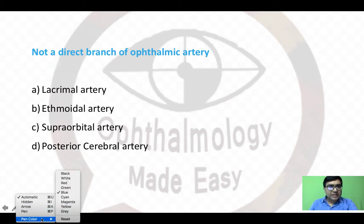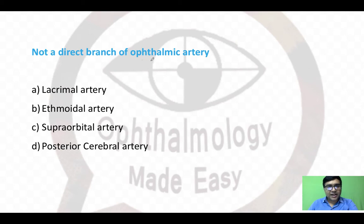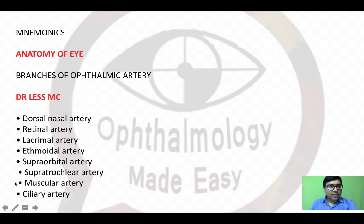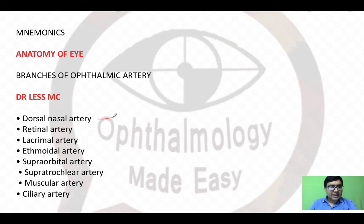The next question asks what is not a direct branch of the ophthalmic artery: lacrimal artery, ethmoidal artery, supraorbital artery, or posterior cerebral artery? The answer is D, posterior cerebral artery. The mnemonic is 'DR LESS MC': D — dorsal nasal artery, R — retinal artery, L — lacrimal artery, E — ethmoidal artery, S — supraorbital artery, S — supratrochlear artery, MC — muscular and ciliary arteries.